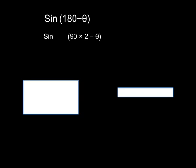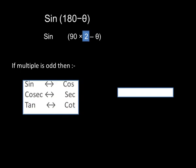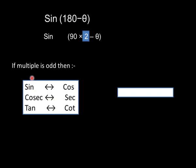Now observe the multiple — two cases arise. If the multiple is odd, then sin will change into cos or cos will change into sin; cosec will change into sec or sec will change into cosec; tan will change into cot or cot will change into tan. If the multiple is even, then there will not be any change in the trigonometric ratio — sin will remain as sin only.